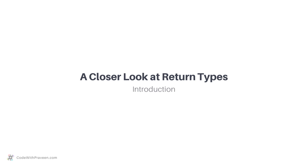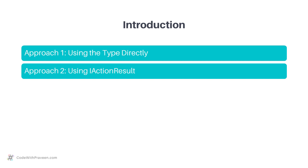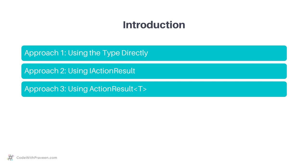When it comes to returning responses from an action method, there are three approaches you can choose from. First, approach 1 uses the type directly. Second, approach 2 uses IActionResult for all the return types. In the last approach, you will be introduced to using ActionResult type to encapsulate all other types.